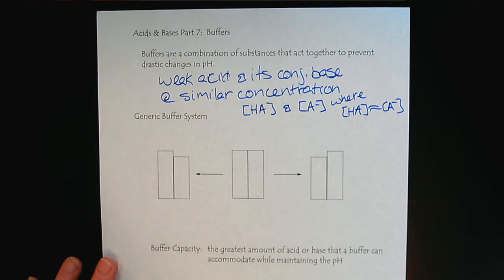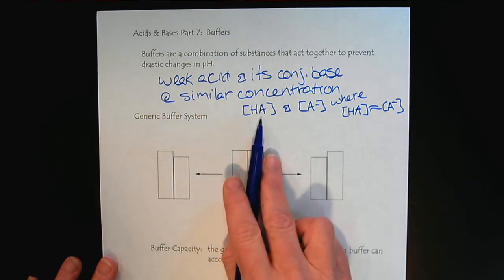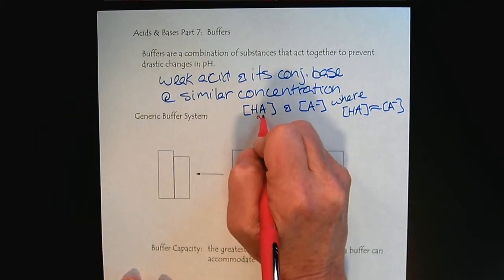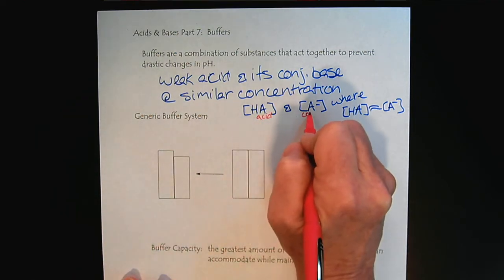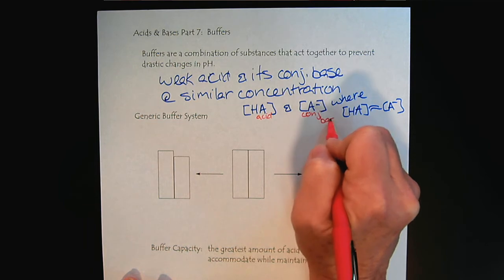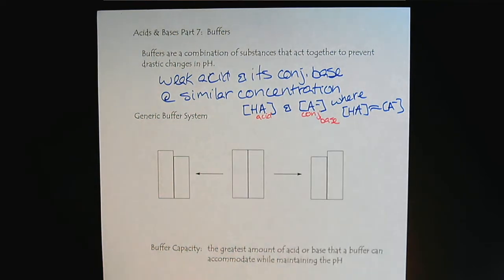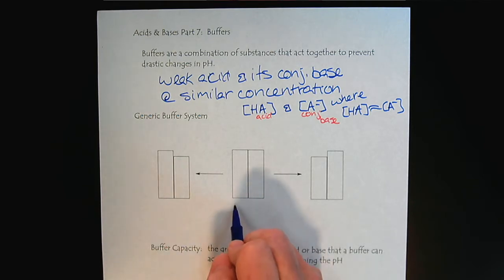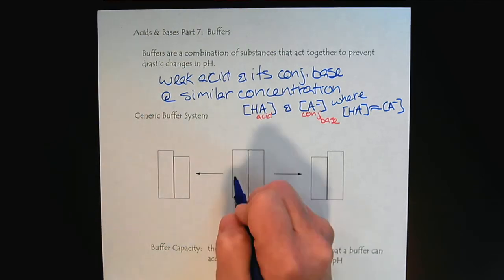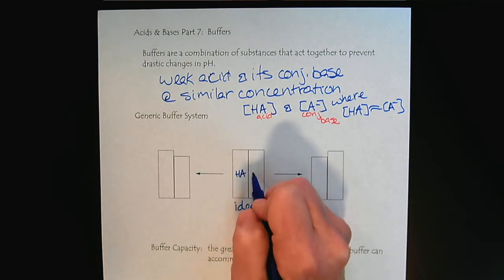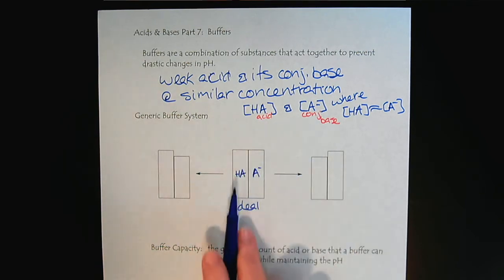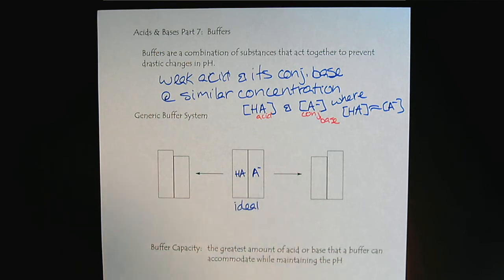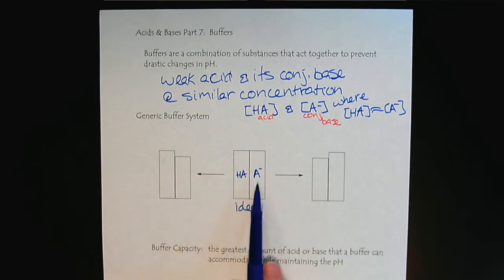So we'll just keep thinking in terms of HA, our acid, and A-, our conjugate base. Let's look at a generic buffer system. Here we have the ideal buffer system where we have our acid and our conjugate base pair at equal concentrations. So we have a weak acid and a weak base.